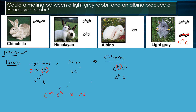We're going to prove this by filling out a Punnett square. If this doesn't work out we try another combination, but I think it's going to work because we've got the right allele. Let's put the albino on top and on the side put the gametes from the light gray: C^CH and C^H.